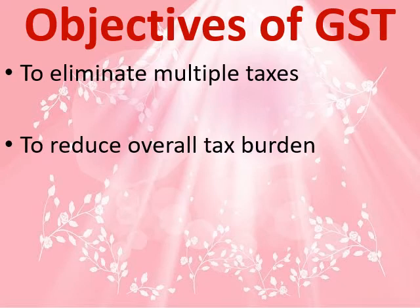Reducing the overall tax burden means it is just one kind of tax we pay, which reduces the prices of goods and services. Earlier, because of so many varieties of taxes, the price of goods and services was pretty high. But now with just one kind of tax, the price of goods and services has been reduced.